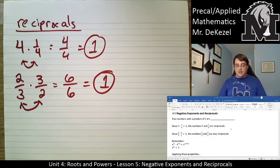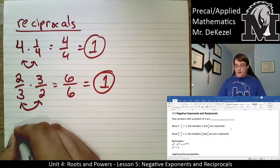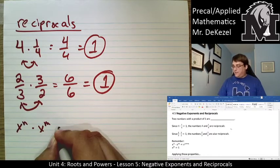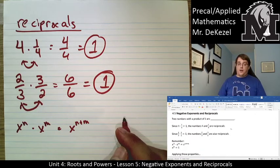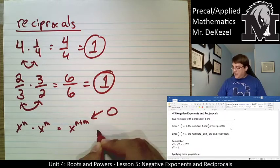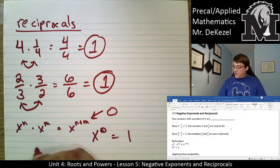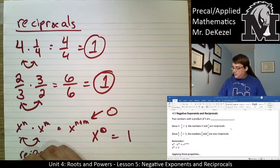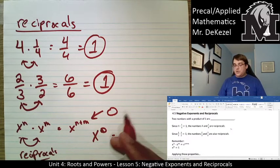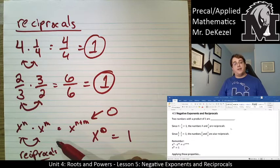When two numbers that have exponents multiply together, we add their exponents. So when we have x^n times x^m, we add their exponents together. If this sums to zero, that means x is to the power of zero, and x to the power of zero equals one. So that would make these two numbers reciprocals.